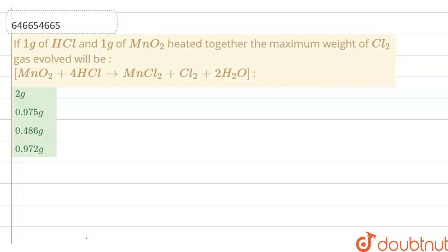Hello everyone, let's start the question. If 1 gram of HCl and 1 gram of MnO2 are heated together, the maximum weight of Cl2 gas evolved will be.